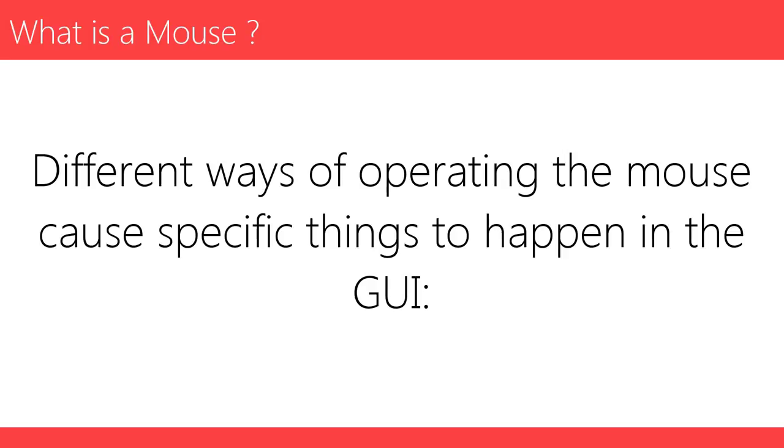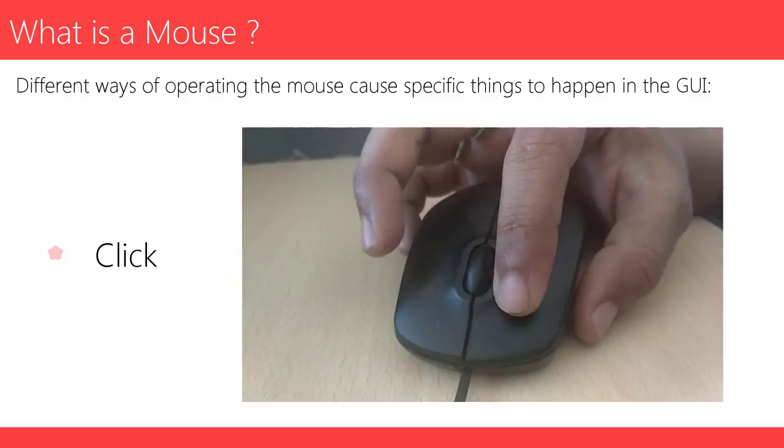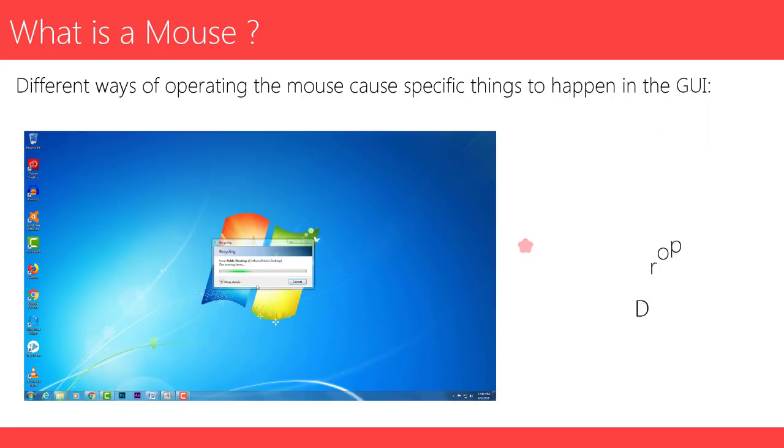Different ways of operating the mouse cause specific things to happen in the GUI. Click: pressing and releasing a button. Drag and drop: pressing and holding a button then moving the mouse without releasing.